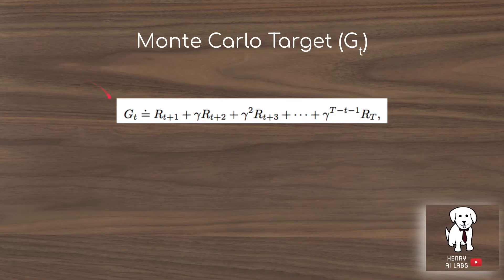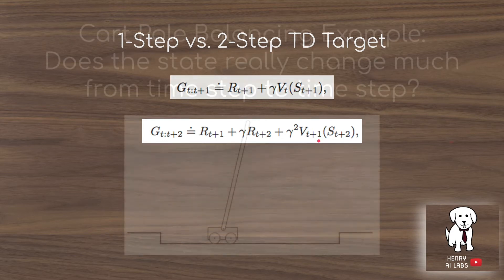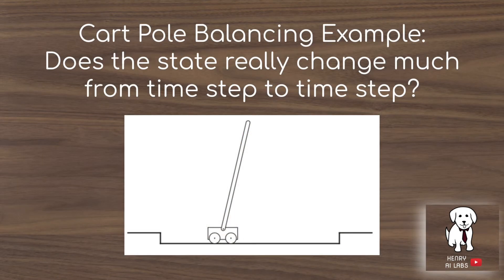The Monte Carlo target G_t is the sum of rewards experienced across the episode, each weighted by discount factor gamma. In one-step TD learning, we estimate the return as the reward from the next action plus the bootstrapped value estimate of the next state. In two-step TD learning, we extend this to take two actions: reward at T+1, plus gamma times reward at T+2, then bootstrap from the value estimate of state S_{T+2}.